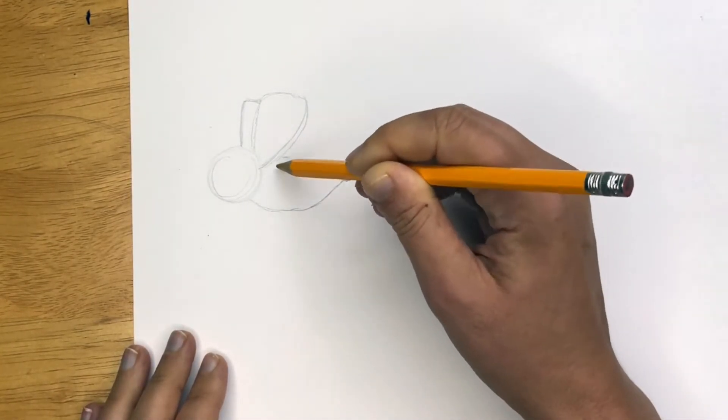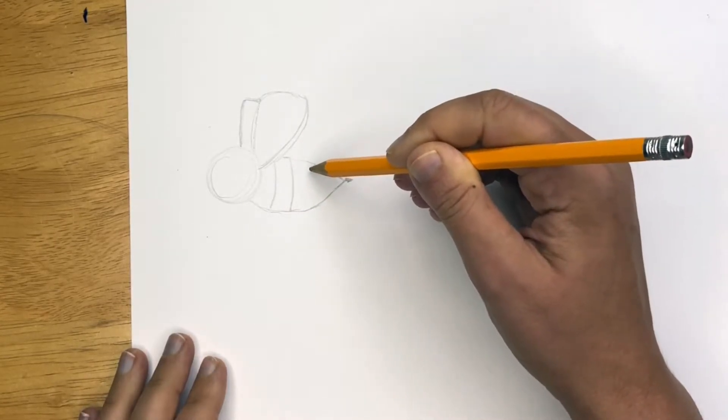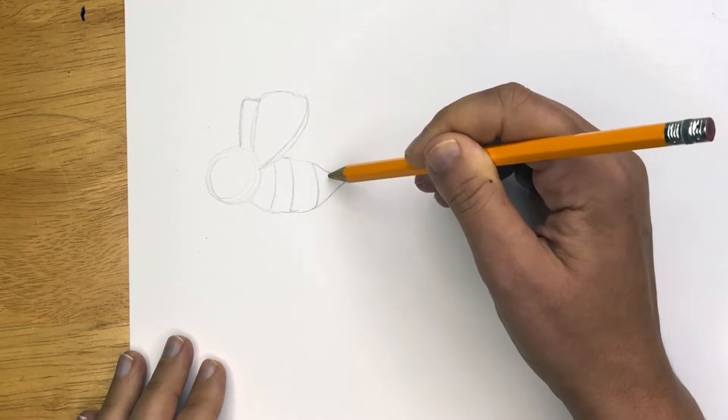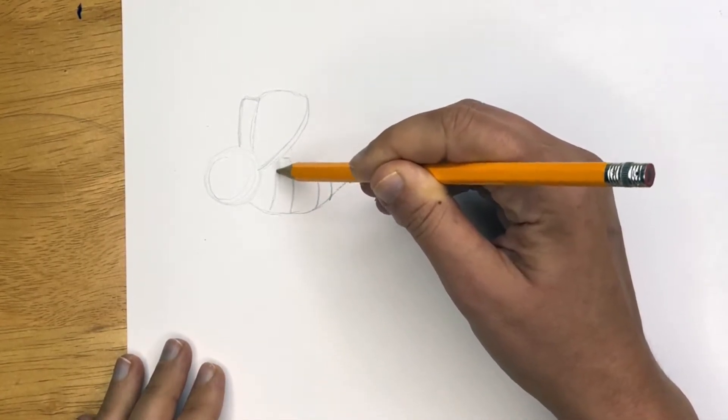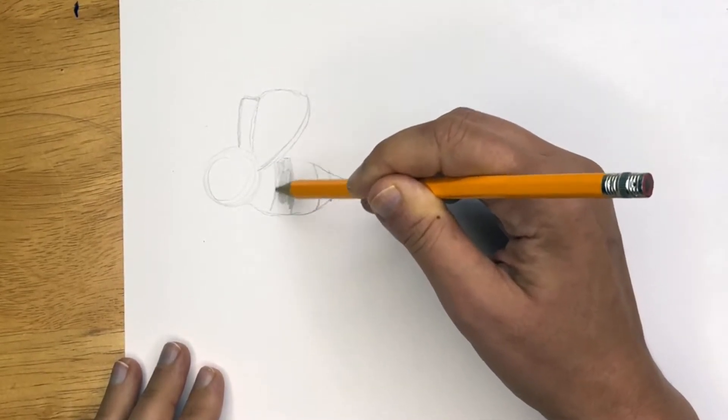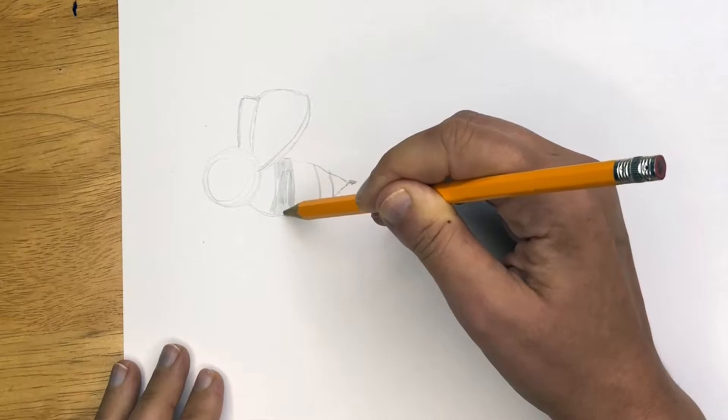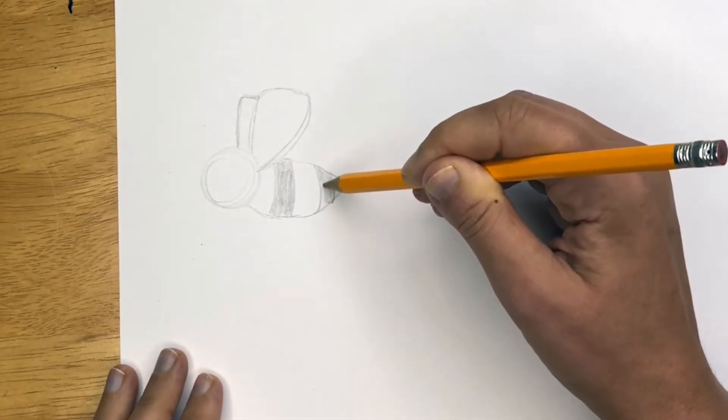And now we can draw the stripes and we're going to draw two stripes and we're going to curve them because the bee is round and this can get shaded in and you could shade it in later with crayon or marker or you could just go ahead and do it with your pencil.